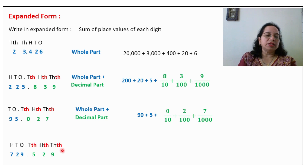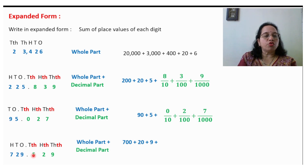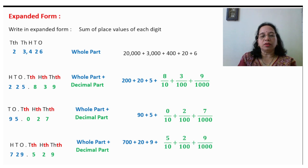Take one more example. Write down the places. For the whole part: 700 plus 20 plus 9. Now for the decimal part: 5 upon 10, plus 2 upon 100, plus 9 upon 1000.